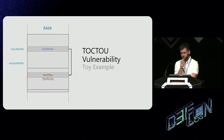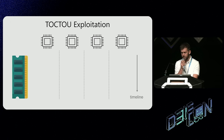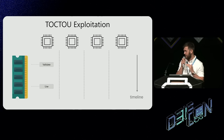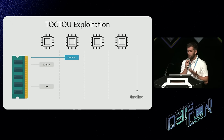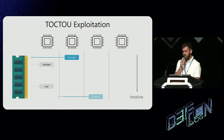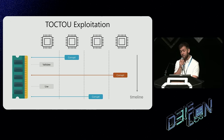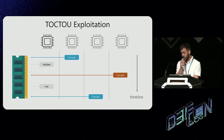In a classic time-of-check, time-of-use exploitation, with a system having four different cores where the first core does the critical SMI handling — validation and usage — we use the other cores to try to corrupt the data. Sometimes we corrupt it before the validation and it simply won't pass. Sometimes after the usage and nothing happens. But eventually, with some luck, we corrupt the data exactly in between validation and usage. However, when an SMI is triggered, all other cores go idle and we cannot use them to corrupt the data.